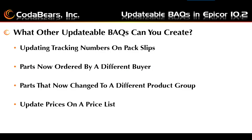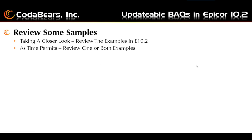What other updatable BAQs can you create? These are a few examples of ideas to get started with: updating tracking numbers on packing slips, parts now ordered by a different buyer, parts that change to a different product group, updating prices on a price list. These are just a few ideas to get started with — you'll come up with more on your own. And now we'll take a look at a few examples in Epicor 10.2.